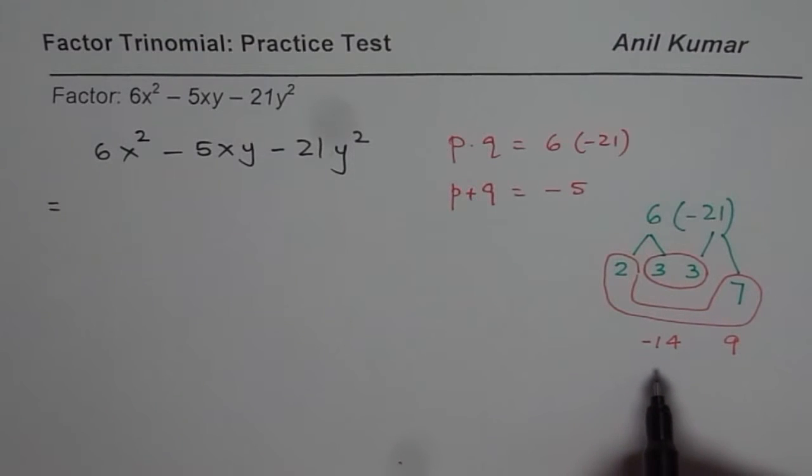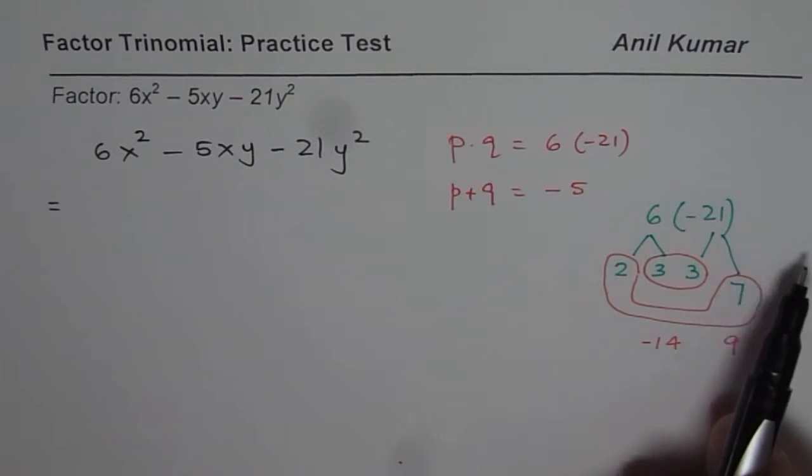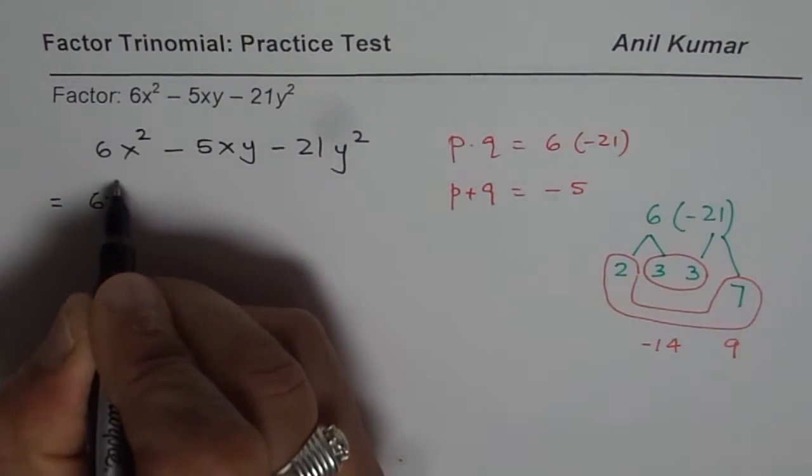The important thing about this strategy is that you don't really have to multiply 6 and 21, get a bigger number and think in those terms. If you factor, you are working with smaller numbers. So that is very helpful. So now we will continue with the factoring process.